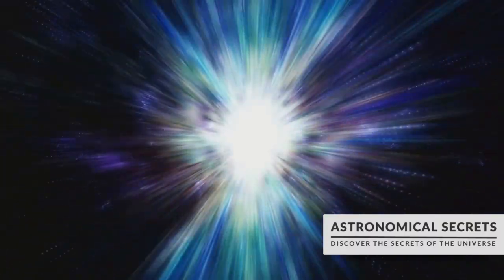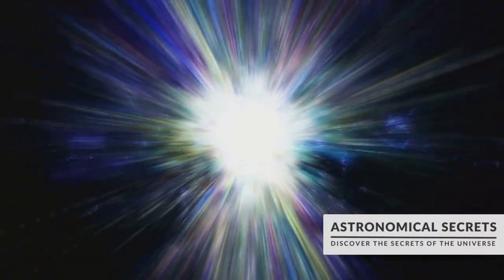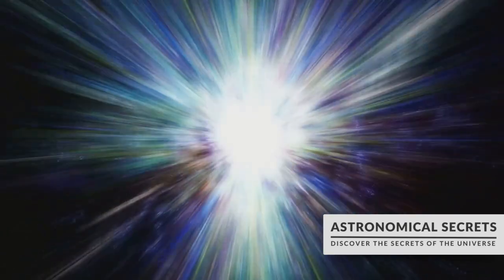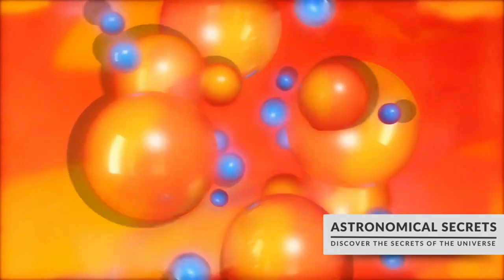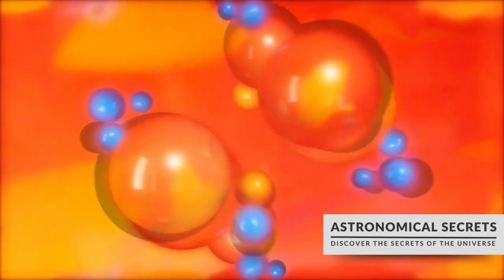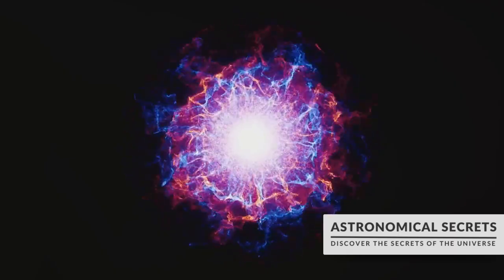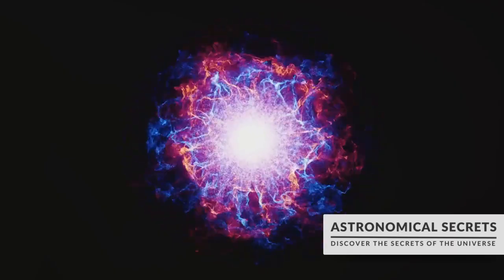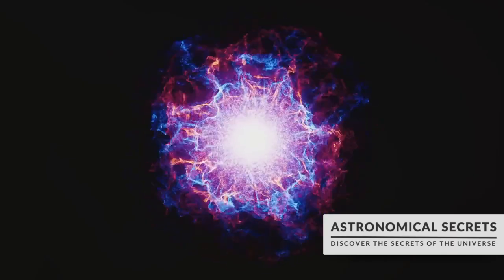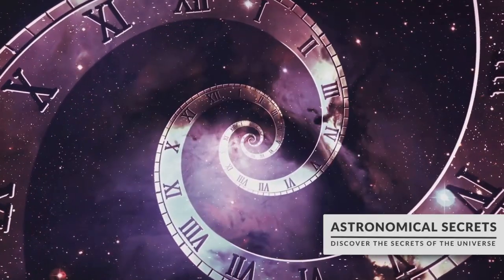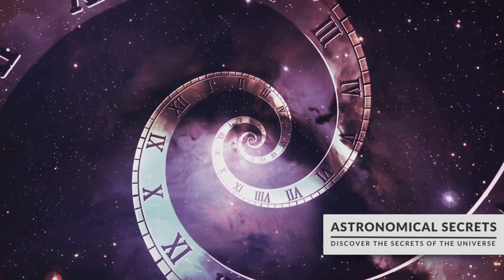But these cosmic lighthouses aren't eternal. Over time, they slowly lose energy and spin down, a process we call spin-down. As pulsars spin down, they convert their rotational energy into electromagnetic radiation and particle emissions. This energy loss, however, is extremely slow. To put it into perspective, it would take a pulsar about a million years to slow down by even one second. This makes pulsars some of the most precise clocks in the universe.